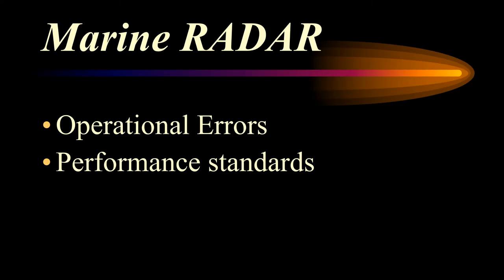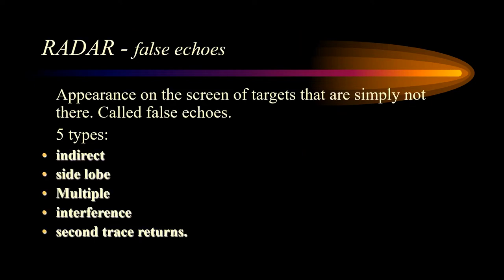In this video I will be talking about the operational errors of the marine radar as well as the performance standards expected of the equipment. On many occasions, echoes known as false echoes appear and tracks appear on the radar screen which are simply not there. These can be summarized into five types: indirect echoes, side lobe echoes, multiple echoes, interference echoes, and second trace returns.